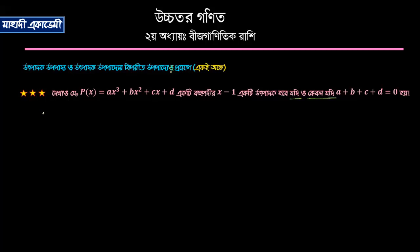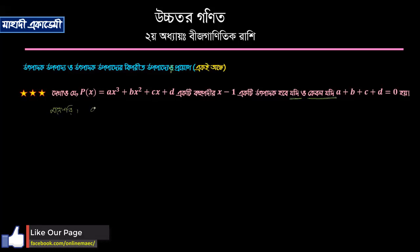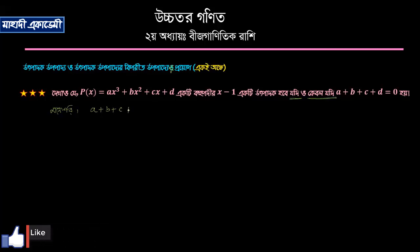So a plus b plus c plus d equals 0. We have here: 0 plus A plus B plus C plus D equals 19.